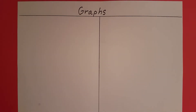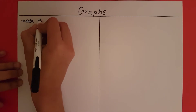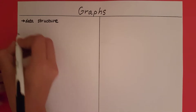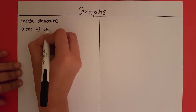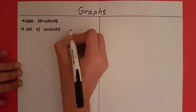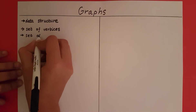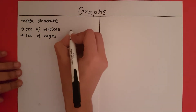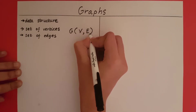Graphs. A graph is a type of data structure. It contains a set of vertices and a set of edges that connect the vertices. So a graph is essentially a set of vertices V and a set of edges E.